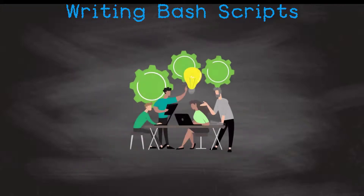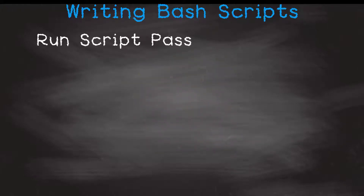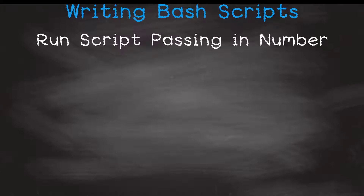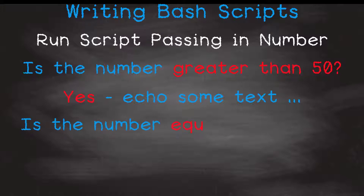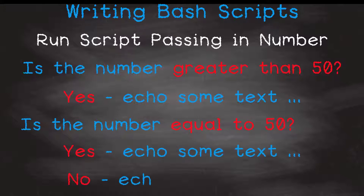Moving on to our first example, let me give you the spec — always a good place to start. Our script would expect to be run passing a number into it. It will then check if that number is greater than 50. If it is, run an echo statement. If it is not, check if the number is equal to 50. If it is, run another echo statement, and if it is not, run another echo statement. A simple script but a good example to start with.